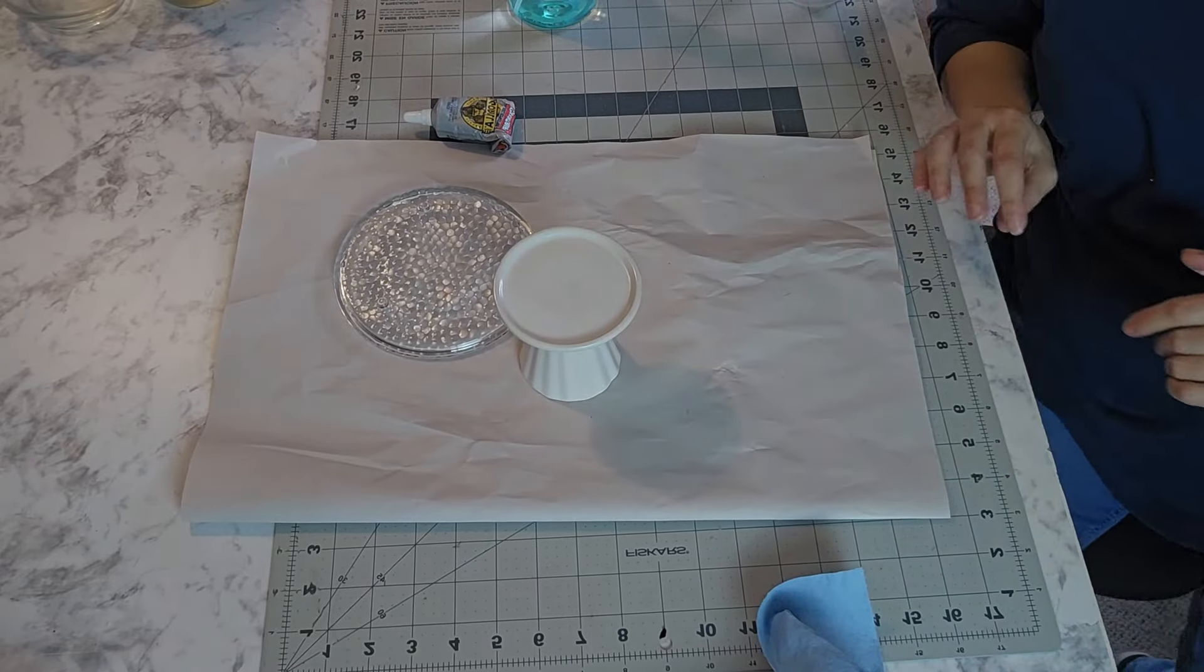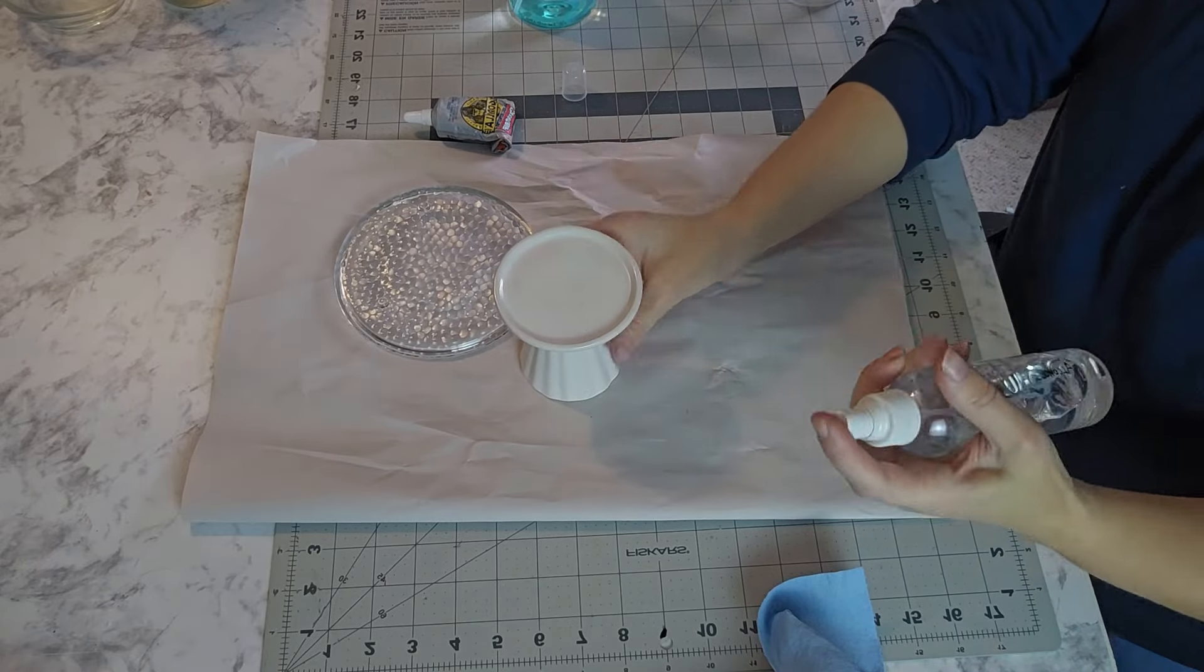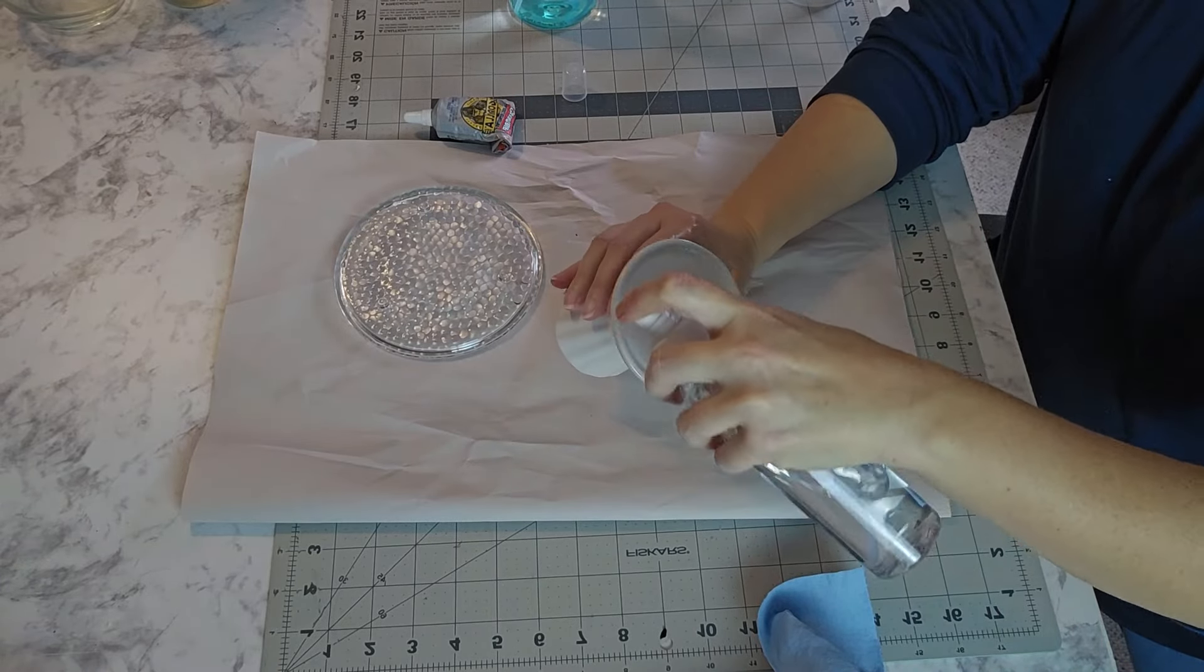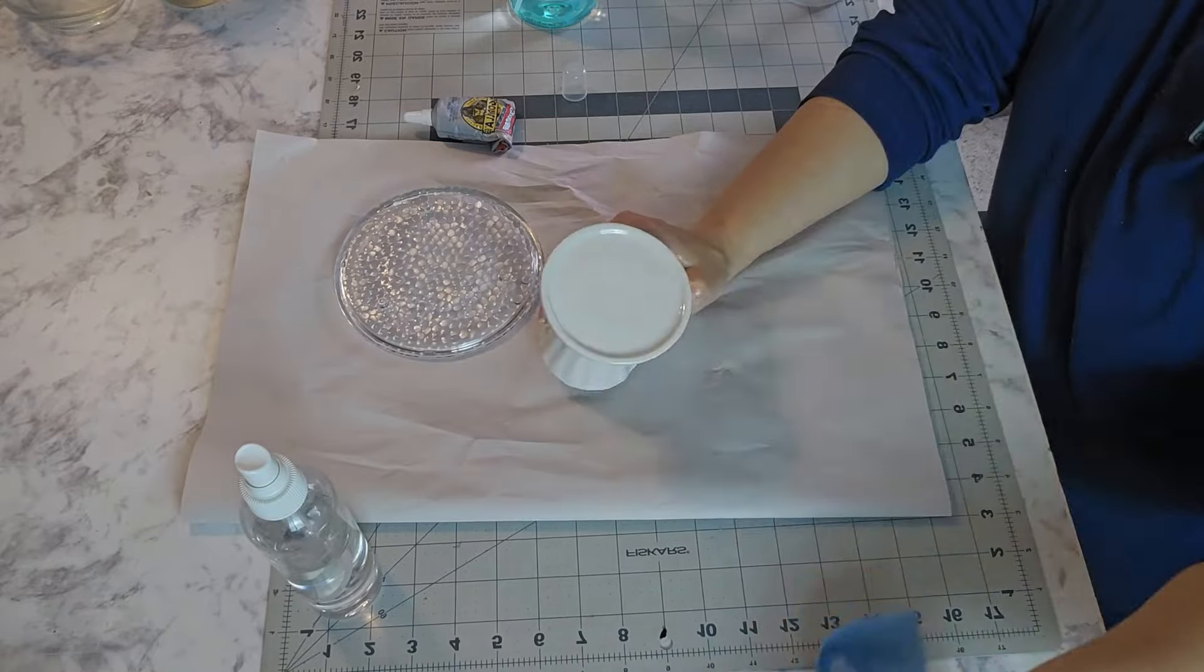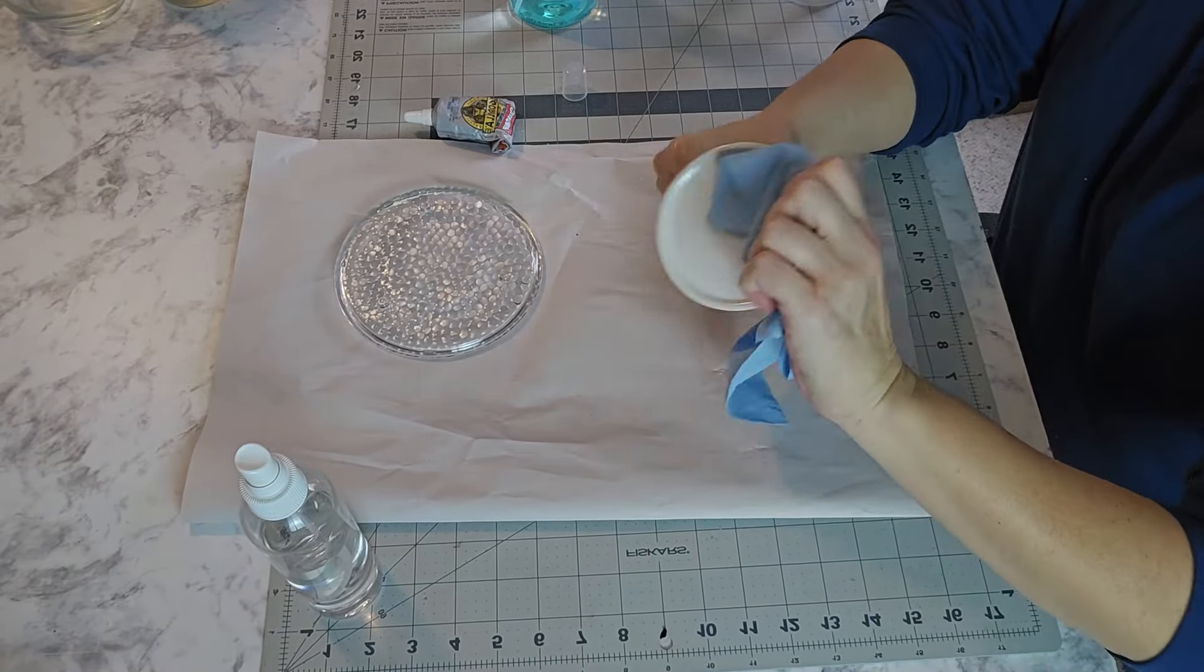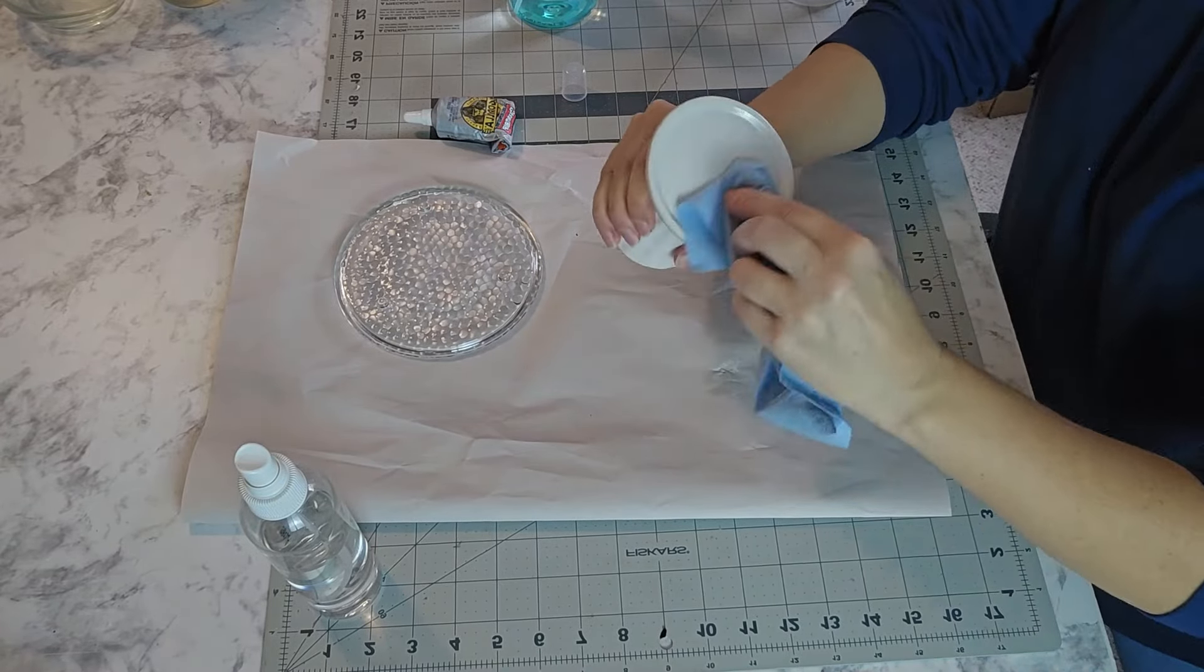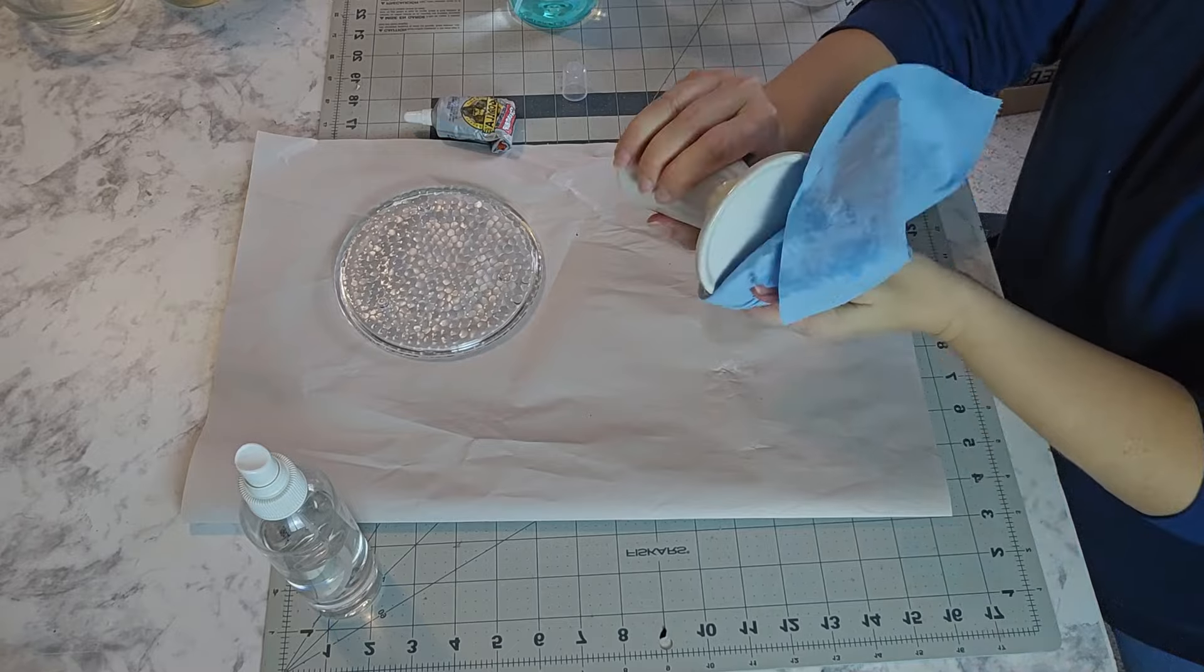I'm going to get some alcohol and wipe this down first. You always want to make sure you wipe down with alcohol. That'll get all your anything that's greasy, like your fingerprints, any kind of dirt, debris, dust. That way you have a nice good hold with your glues.